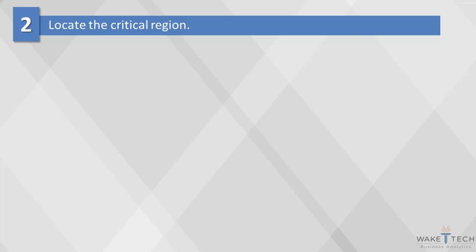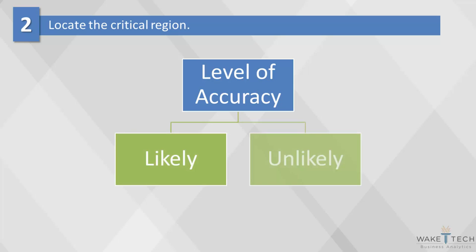In step two, we will locate the critical region. Once we've established the research question, we have to define the level of accuracy with which we want to measure our test statistic. Any estimate from a sample will not be exactly the same as the population parameter, so we have to decide what we think is likely versus unlikely. This is called locating the critical region.